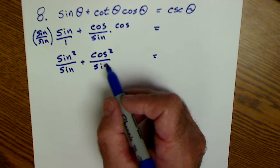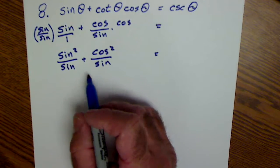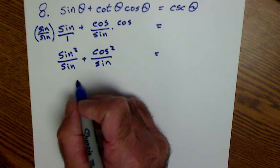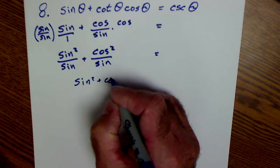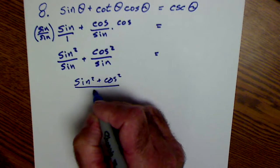I should draw all my thetas in. I'm just going quickly. I have a common denominator. I could add my numerators together. Sine squared of theta plus cosine squared of theta all over sine.